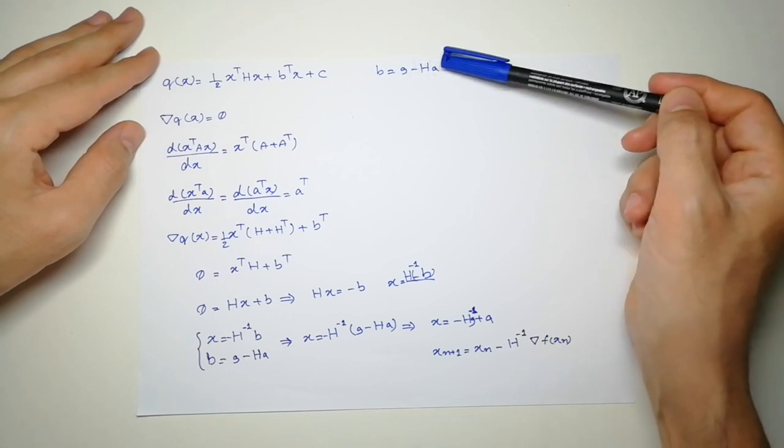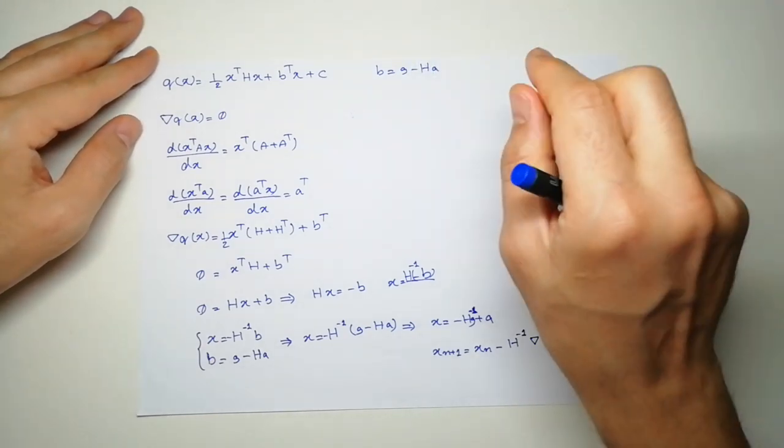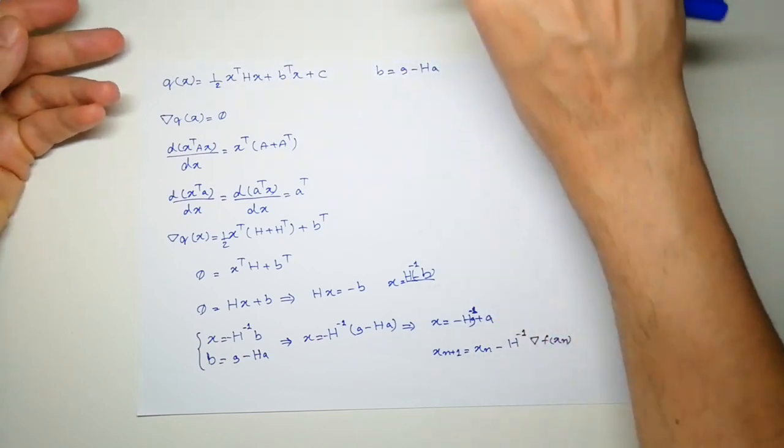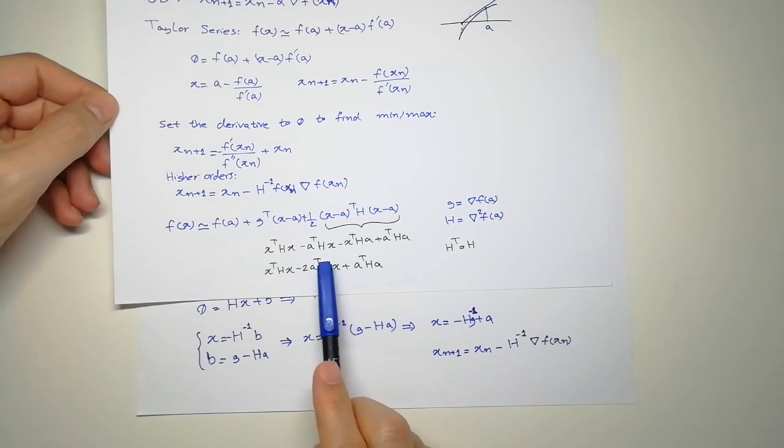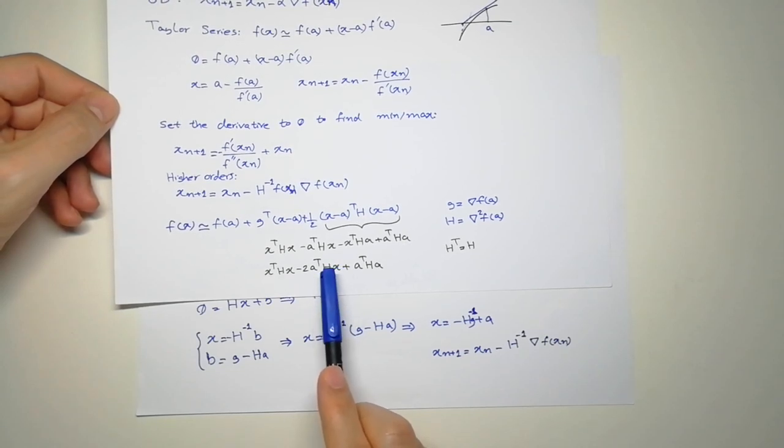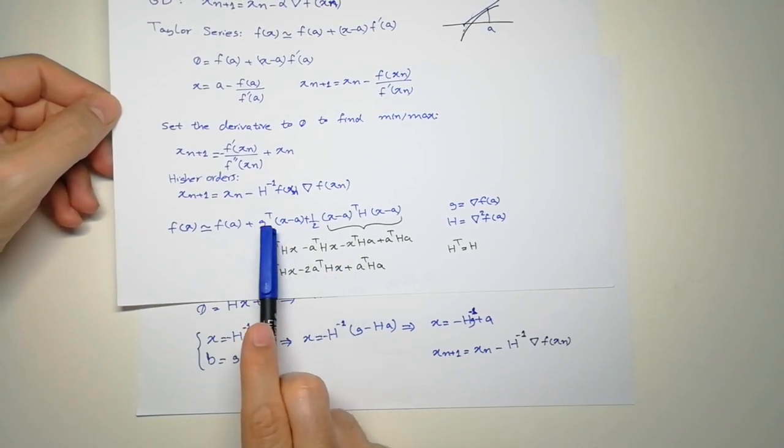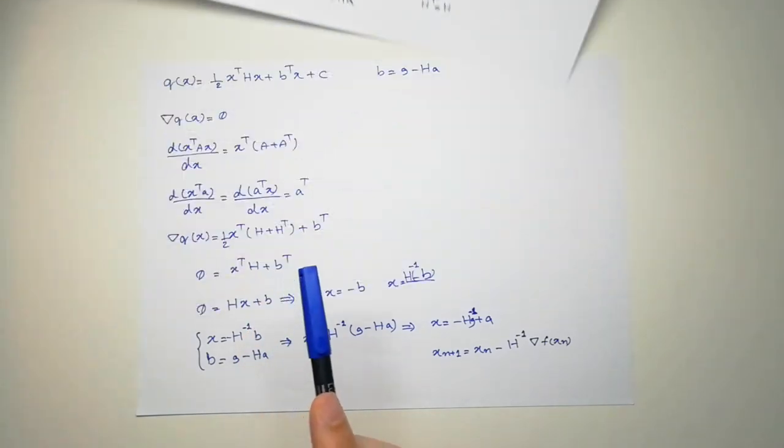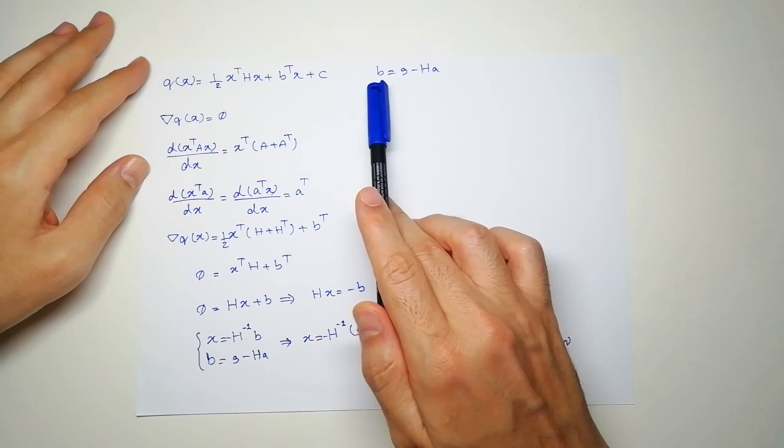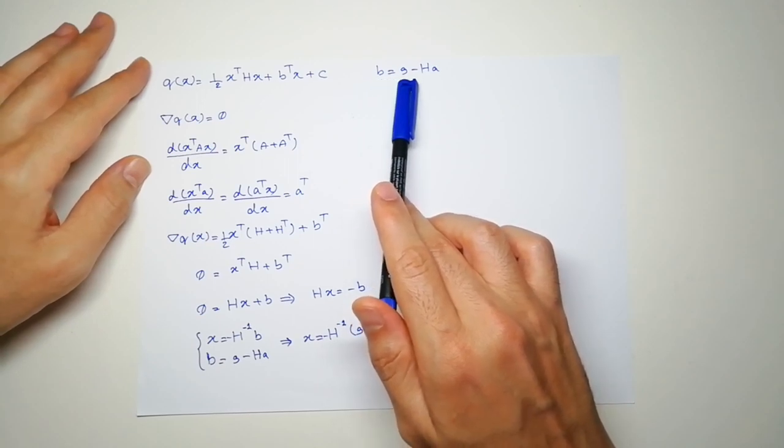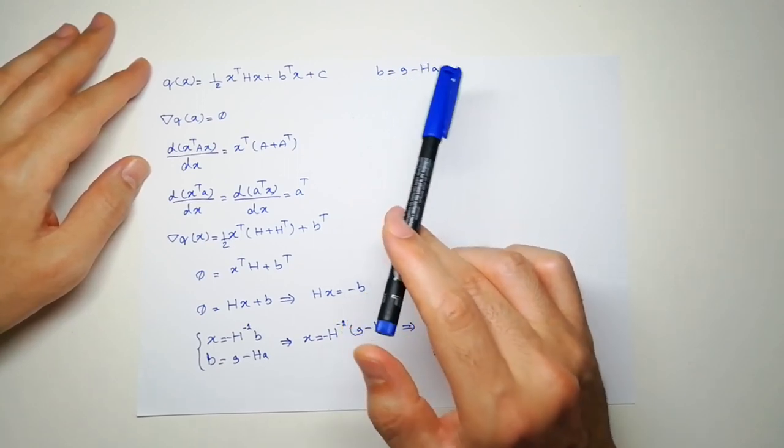Okay, and b is equal to g minus H a. This is pretty easy to investigate if you have a look at this formula. You have some value for x here, a transpose H, and also something here, g transpose, and if you just wrap it and name it b, you have g minus H a.